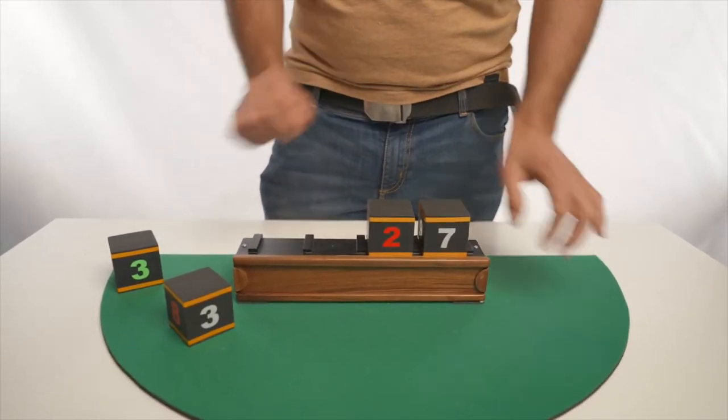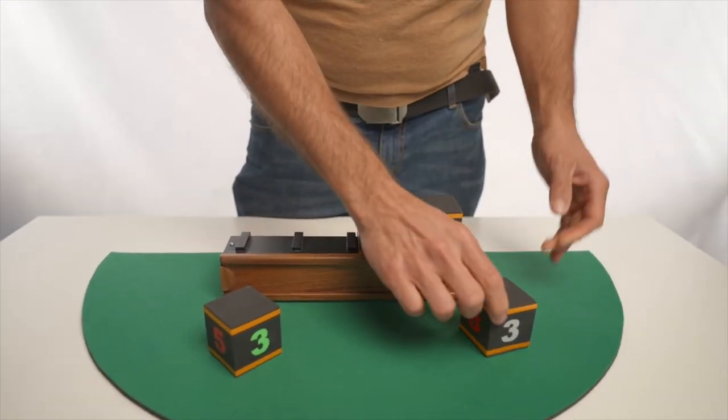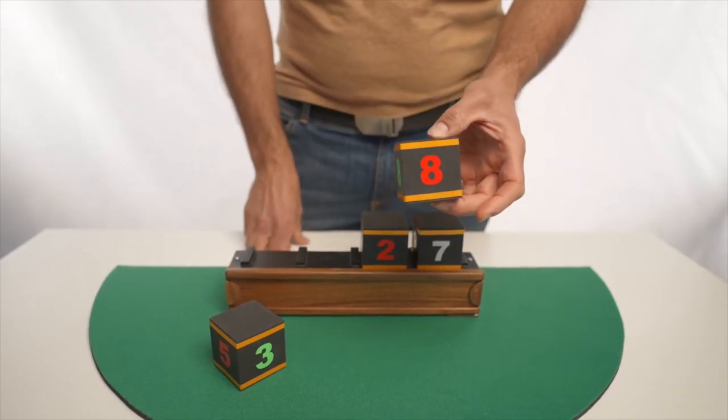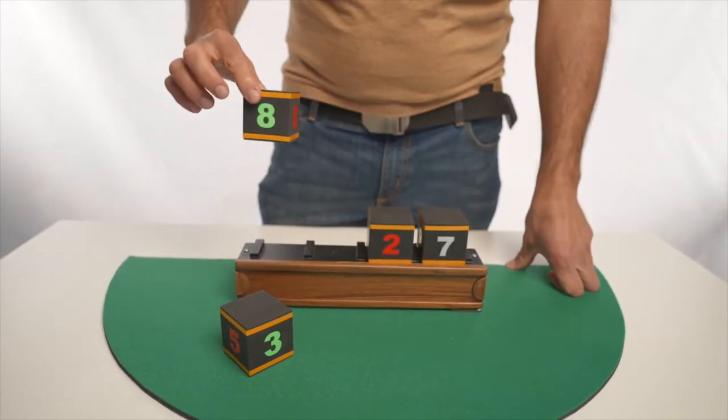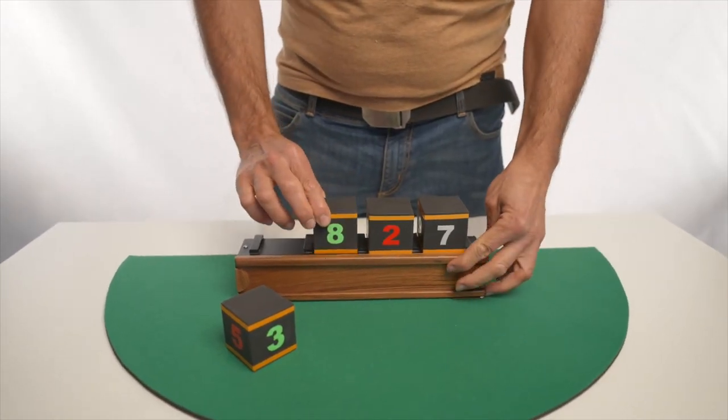Two cubes left. Which one do you want? This one. OK, the numbers are three, zero, green eight and red eight. Green eight. OK, where do you want me to put it? In position two. Three. Right.